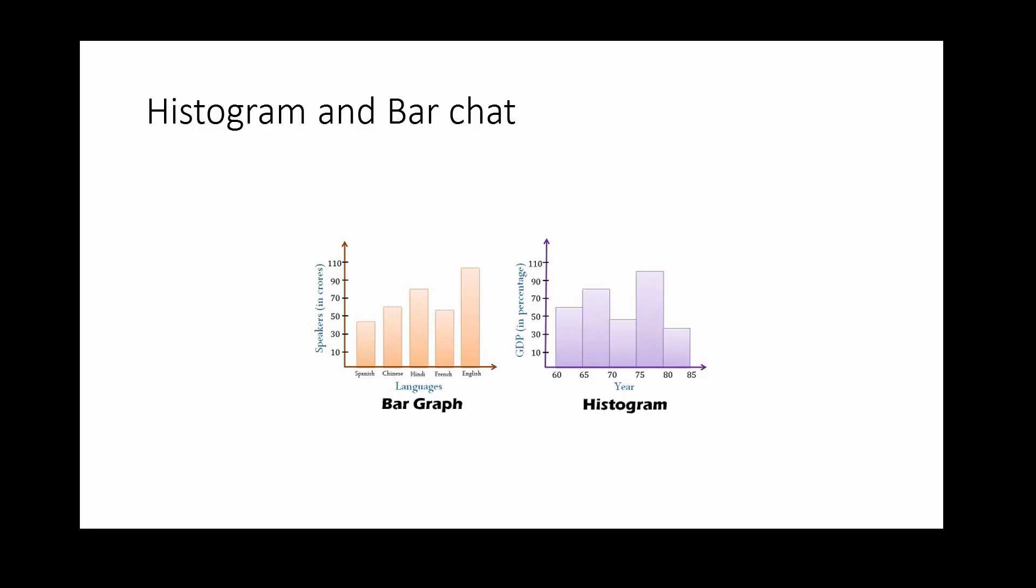On the other hand, the bar graph is for the categorical data and you can see here. So there are different languages and you will see the number of speakers for these languages, for each of these languages.